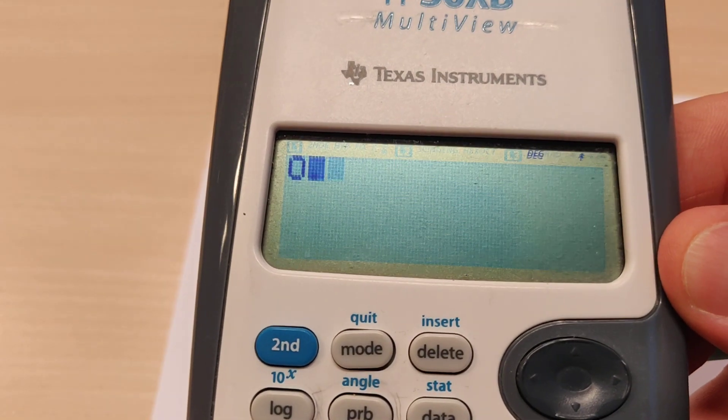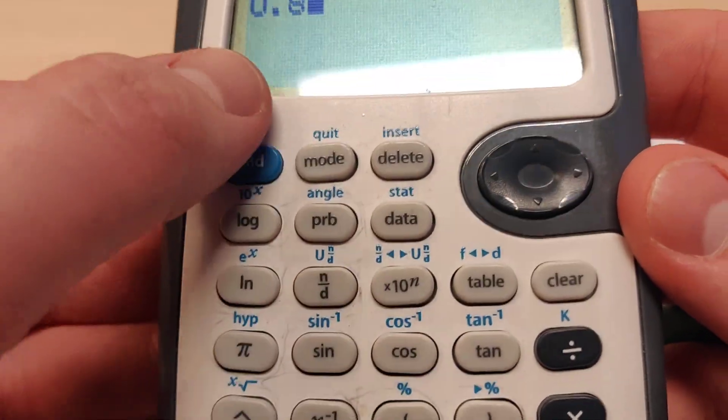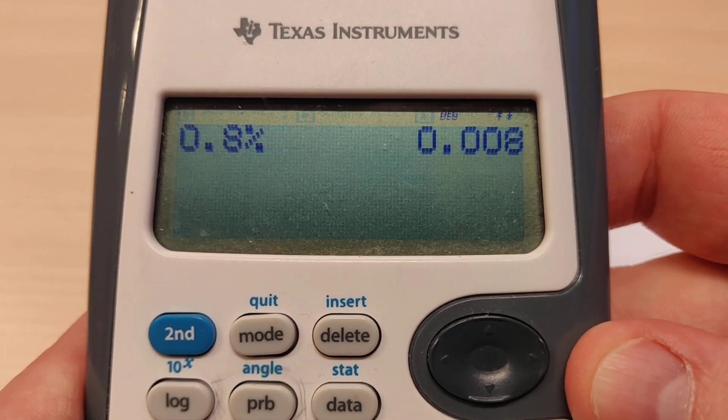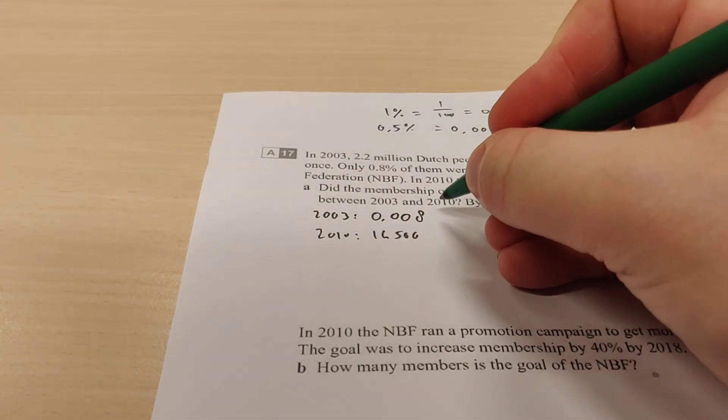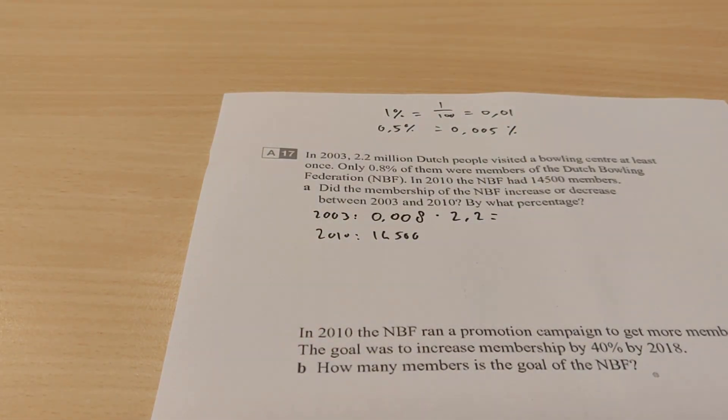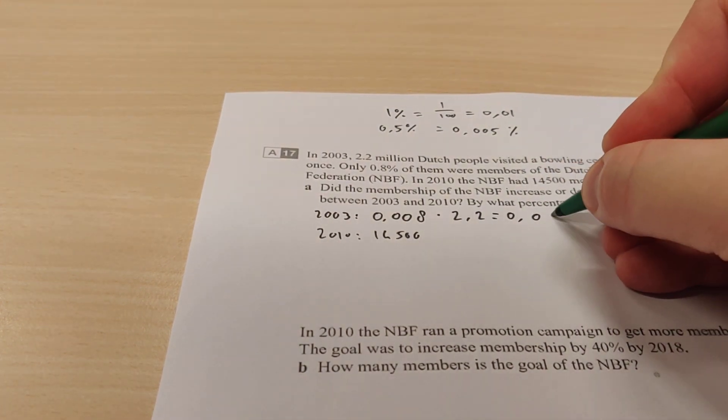If I type in here 0.8% and then I press the percentage button, which is over here. So I have to press this one and then this one here. And then it says, oh, it's that number. And that's the one we used to calculate with. So here we have 0.008 and we multiply that with 2.2 million. So if I multiply this with 2.2, I get 0.0176.